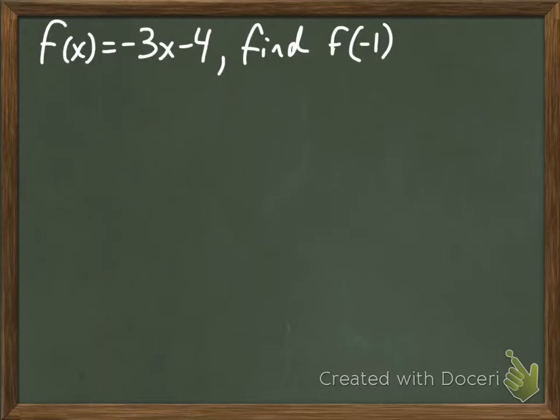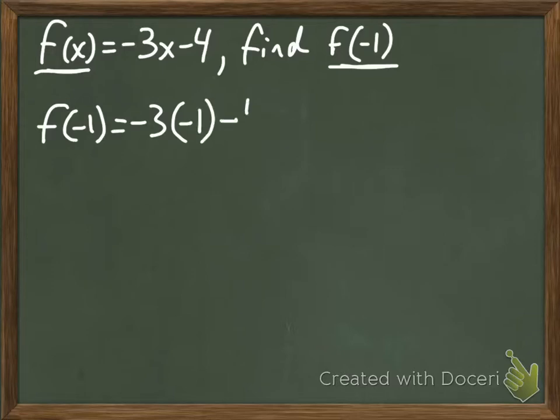Now we have f of x equals negative 3x subtract 4, and we're going to find f of negative 1. You see here it says f of x, and then here it says f of negative 1. So in place of that x, we're going to put a negative 1. So f of negative 1 equals negative 3 multiplied by, in place of my x, I'm going to put negative 1, subtract 4.